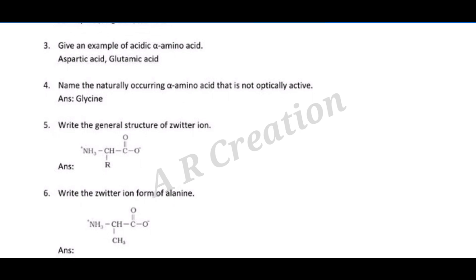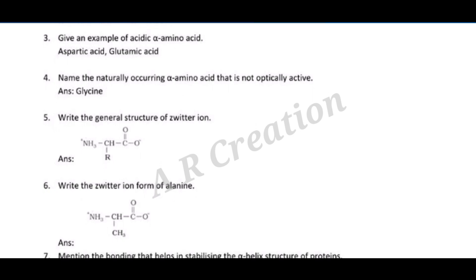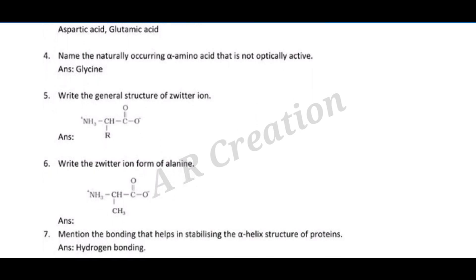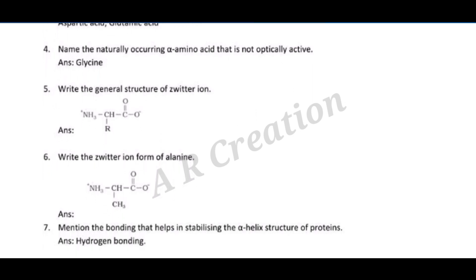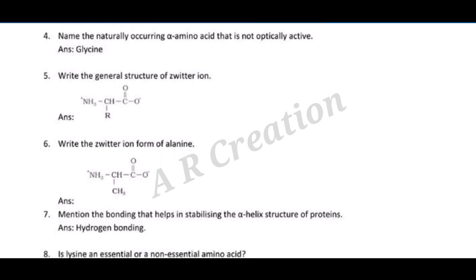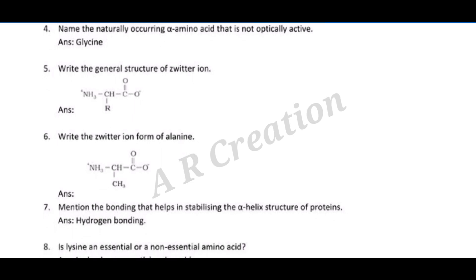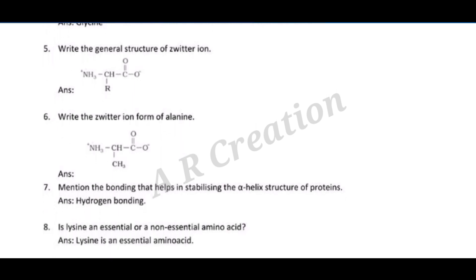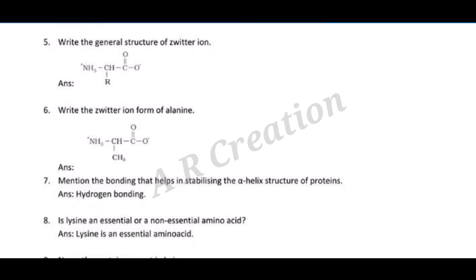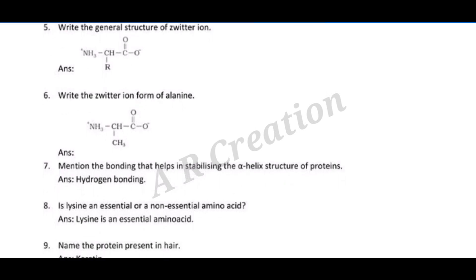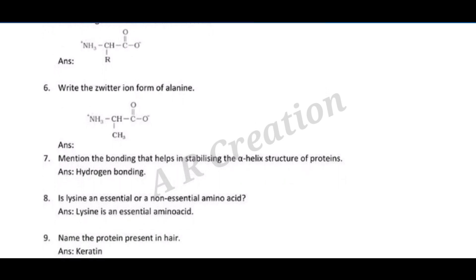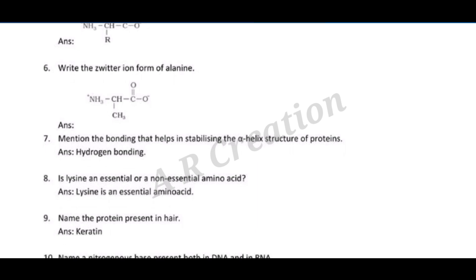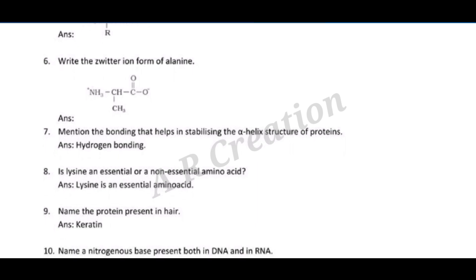Question four: name the naturally occurring alpha-amino acid that is not optically active. Answer: glycine. Question five: write the general structure of a zwitterion. Answer: NH3+ CH(R) COO−. Question six: write the zwitterion form of alanine. Answer: NH3+ CH(CH3) COO−.